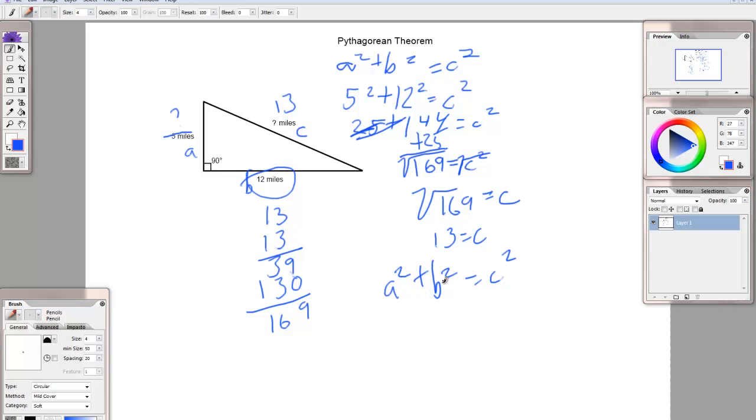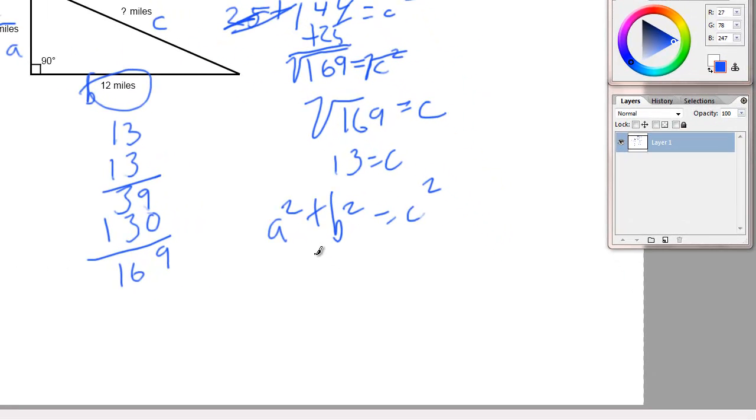The way to get rid of something is to do the opposite operation. So, this is plus b squared, so you do the opposite of plus, which is minus. So, minus b squared to both sides of the equation. So, a squared equals c squared minus b squared, because you do it to both sides. So, that's our formula we're going to use to find out what a squared is.